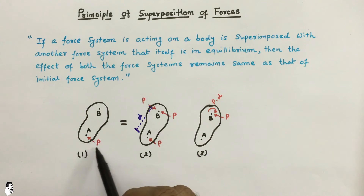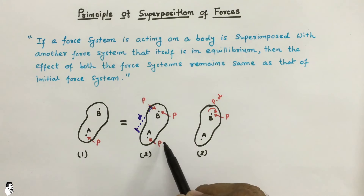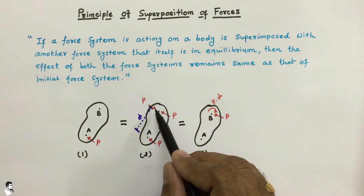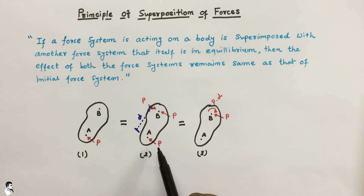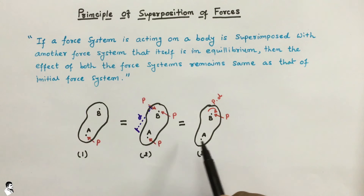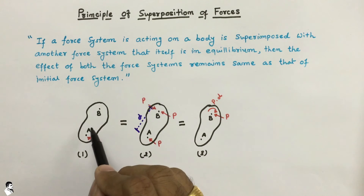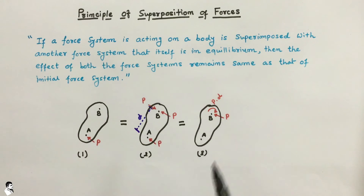Whatever rotation and translation is produced by force P in the first case, the same effect is applicable with the three forces in the third case. We can also convert the third case's couple into P×D. So whatever the effect of translation and rotation due to these forces, those are similar in this case also. The first system is completely transferable to another force system while maintaining the same effect on the body.